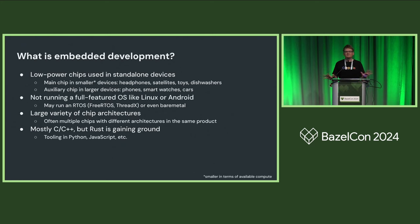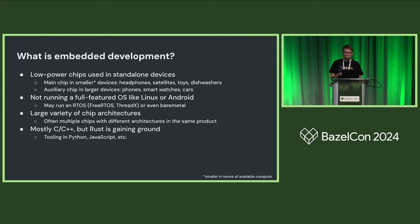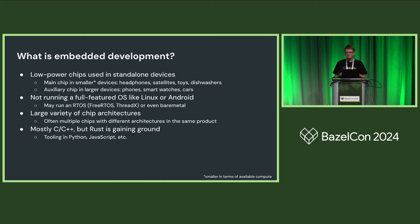Historically many embedded developers would think of themselves mostly as people who write C or C++. But this was never entirely true, and gradually it's becoming less so. New languages, especially memory-safe languages like Rust, are making their way into embedded products. Also, embedded development has always involved developing a suite of surrounding tools — tools for flashing firmware, running factory tests, running diagnostics — typically written by the same teams and in the same codebase, often in Python or web languages. So firmware development is a multi-language undertaking.